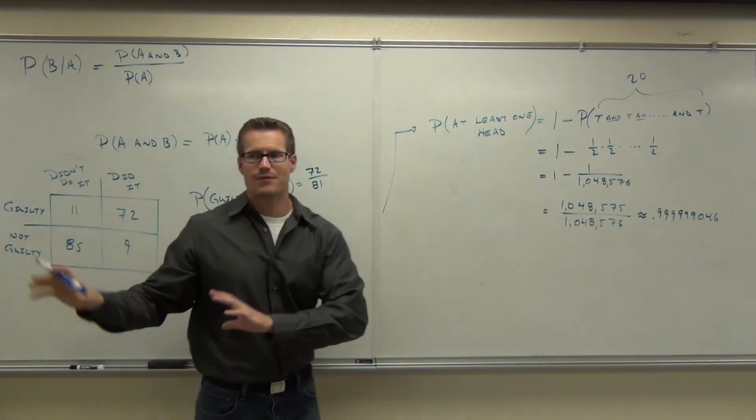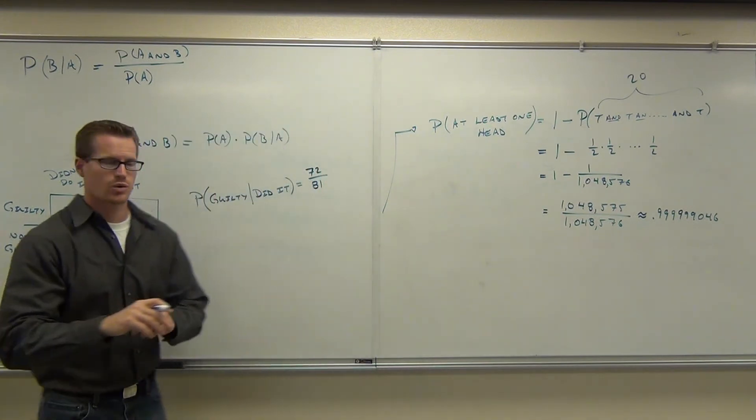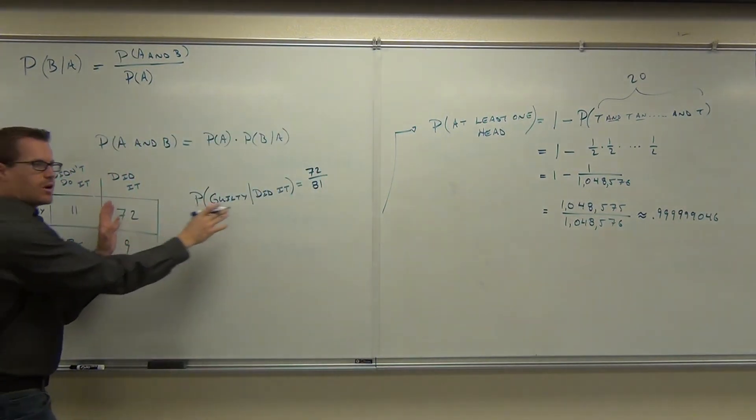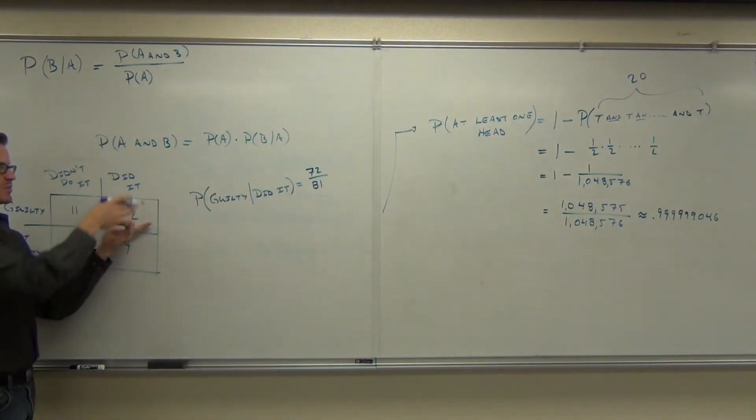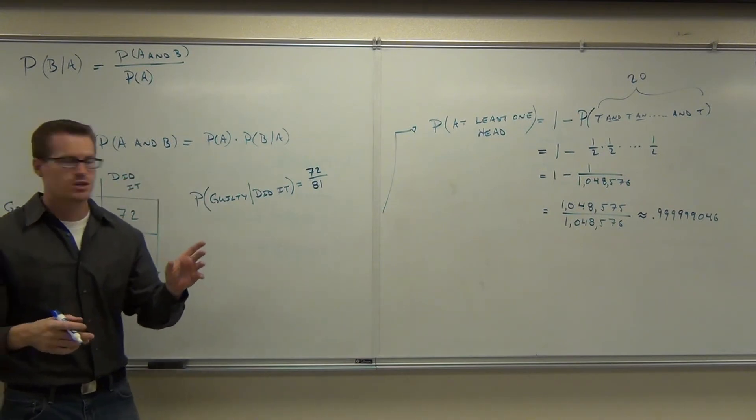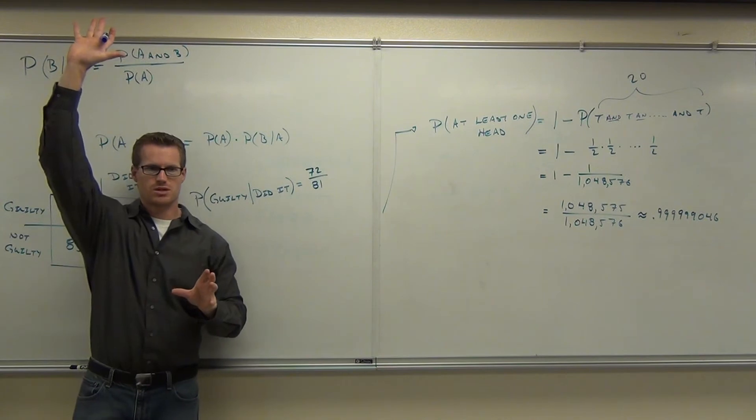Notice how we've eliminated half our table there. We've eliminated half our table because we're only looking at the did it's. This already kind of limited what we can choose from. Say, oh, there's only 72 people who did it out of a possible 81 who did it. If we know they already did it, that limits what we have to look at. How many people understood that? Raise your hand if you did.